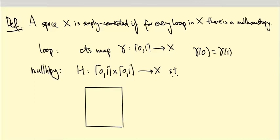And so we should think of this as a family of loops. So H is supposed to be a family of loops, all based at the same point. In other words, if I restrict attention to a horizontal line in this square, what I get is a loop whose end points are the same as the end points of gamma.